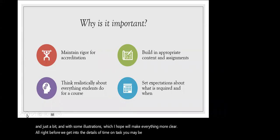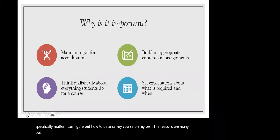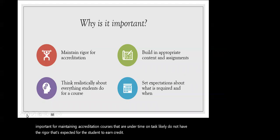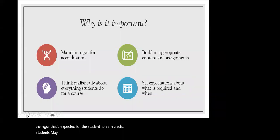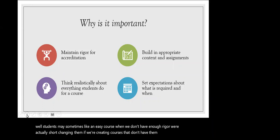You may be wondering why this specifically matters. Making sure all courses meet time on task is important for maintaining accreditation. Courses that are under time on task likely do not have the rigor expected for the student to earn credit. While students may sometimes like an easy course, when we don't have enough rigor we're actually shortchanging them if we're creating courses that don't have them working up to that required time on task.